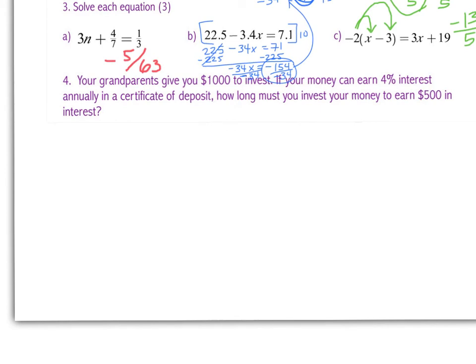How long is it going to take you to make $500 in interest? Your grandparents gave you a grand. If your money can earn 4% interest annually, meaning yearly, in a certificate of deposit, how long must you invest your money in order to earn $500 in interest? Caleb. 40 years. No. Kiana. 12 and a half years. 12 and a half years.